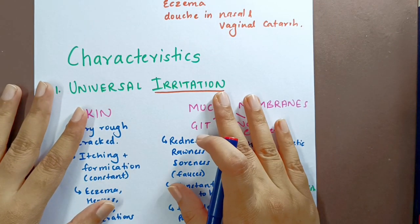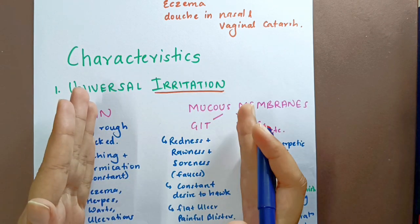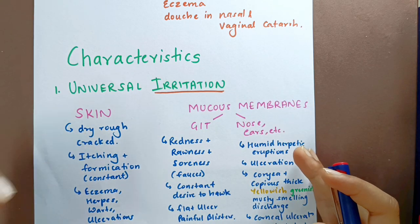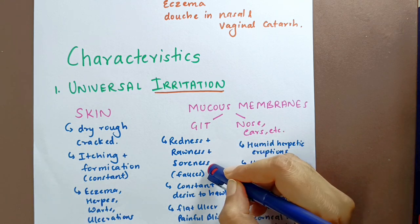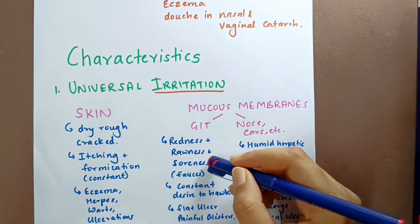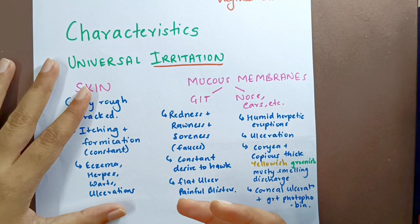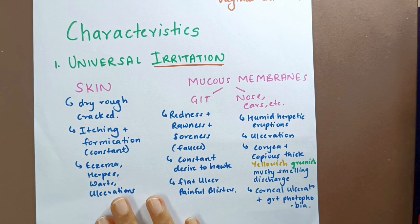When Natrium Carb acts on the alimentary tract, from the mouth to the anus it is in a state of irritation which borders on inflammation. You will see redness in the mucous membranes, rawness and soreness — especially visible in the pharynx, which will appear completely red and raw. There is constant desire to hawk, and flat ulcers and painful blisters form. Ulcer formation is an important point to remember.